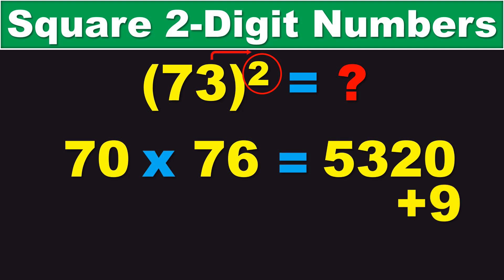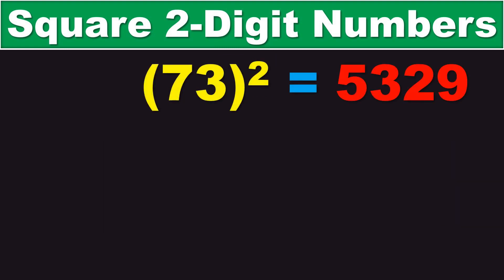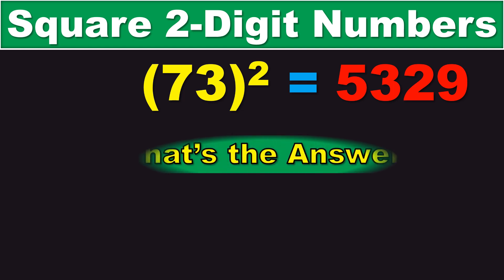And, then, if you add that square, 9, to the product we found earlier, 5320, the answer is 5329. And, that is the square of 73. And, that is the trick.